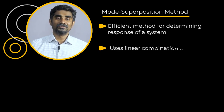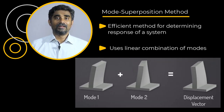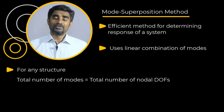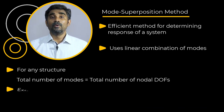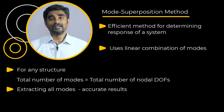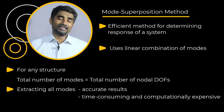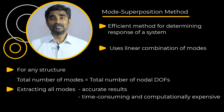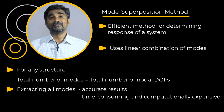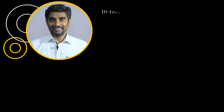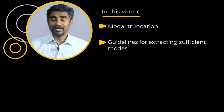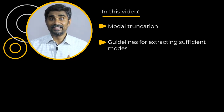This method uses a linear combination of modes for calculating the response of a structure over a range of frequencies. For any structure, we can extract as many modes as nodal degrees of freedom. While extracting all such modes will yield accurate results, it will be a time-consuming and computationally expensive task. Thus, it becomes crucial to understand the adequate number of modes that should be extracted for getting results with sufficient accuracy. In this video, we will explain modal truncation and also discuss some guidelines on how to extract enough modes and still get very accurate results.